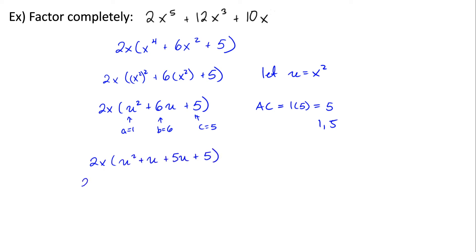Now we'll factor by grouping. The common factor here is u, and here our common factor is 5. Now we have a common factor of u plus 1. And now we're almost done. We just have to remember that u is equal to x squared. So we need to replace u with x squared. And then we're finished.